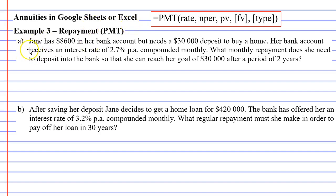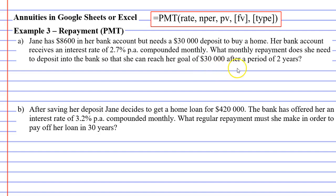In question A, Jane has $8,600 in her bank account, but she needs a $30,000 deposit to buy a home. Her bank account receives an interest rate of 2.7% per annum compounded monthly. What monthly repayment does she need to deposit into the bank so that she can reach her goal of $30,000 after a period of two years?